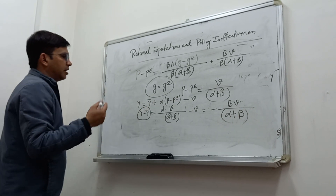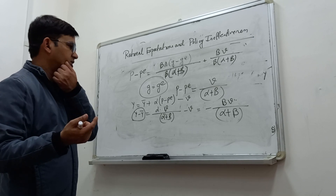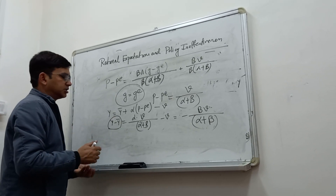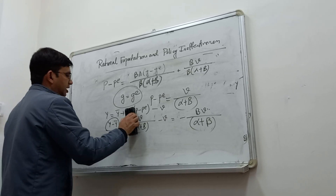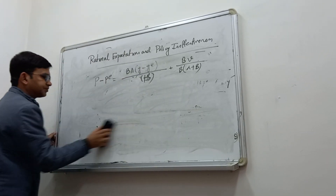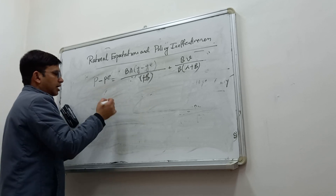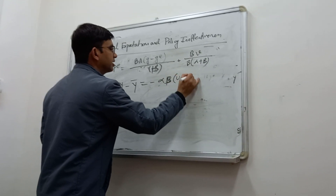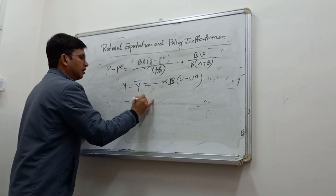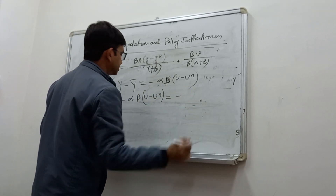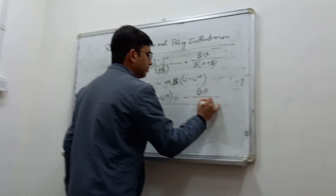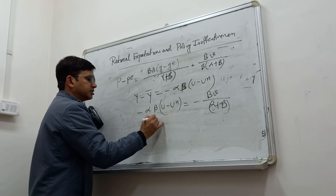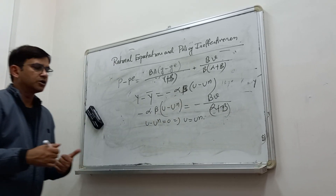If V is positive — a negative supply shock — actual output will be less than the natural level of output, and vice versa. Considering cyclical unemployment using Okun's Law, Y − Ȳ = −α·B·(U − UN). So U − UN = −B·V / (α + B). If there is no supply shock, V equals zero, and therefore U equals UN — there will be no cyclical unemployment.